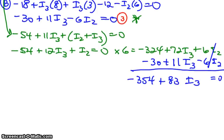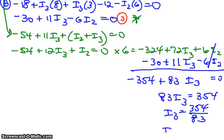Let me just scroll down there. 83I3 equals 354. I3 equals 354 divided by 83. And finally, let's see, 354 divided by 83 is 4.27, 4.265 amps. There's my first answer. Now there's I3.